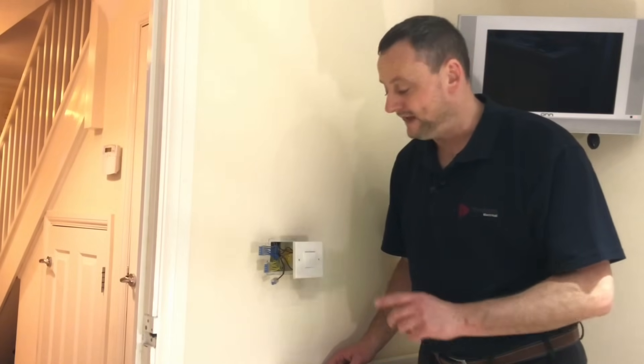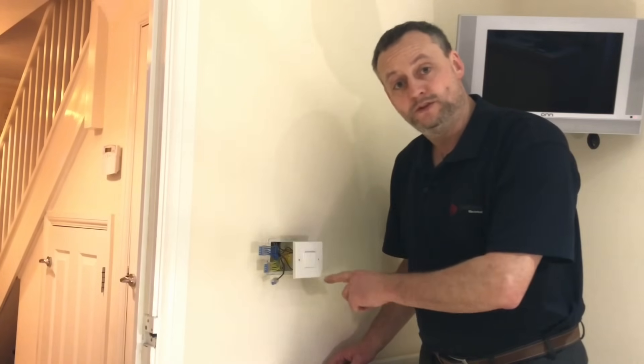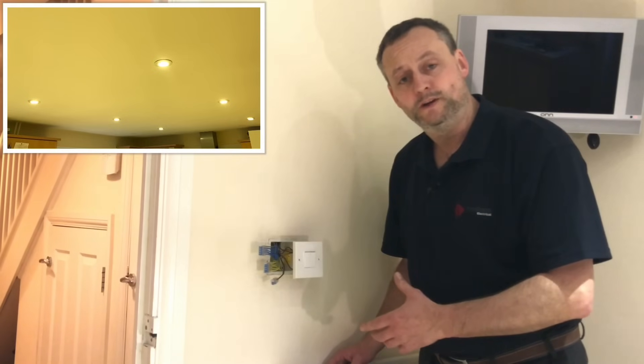So I've done all those stages and now we're going to look at the connections within this two gang light switch. Both switches are being used as one way switches for the main lights in the kitchen and also some under pelmet lighting.